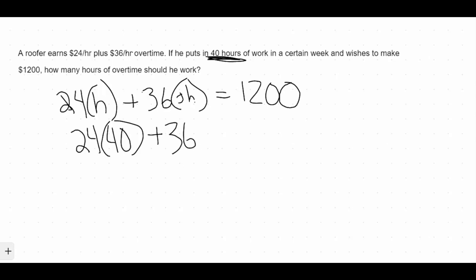So we would take $24 times a 40-hour work week, plus 36 times however many overtime hours he's going to be working, and we want that to be that $1,200. So we're solving for this H here, this overtime hours, and we are going to simplify down this equation to see if we can solve for that amount of hours.